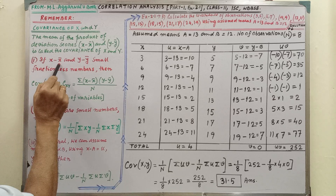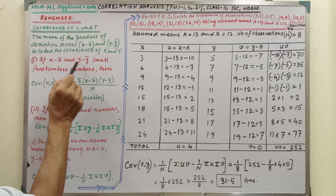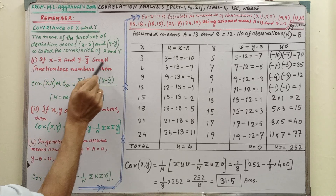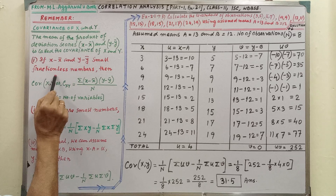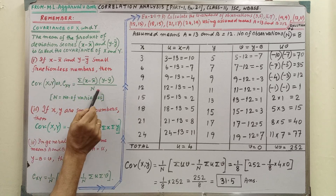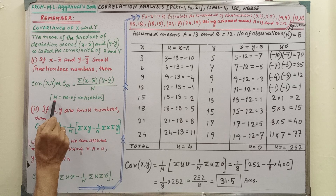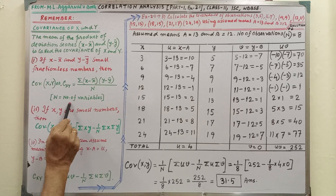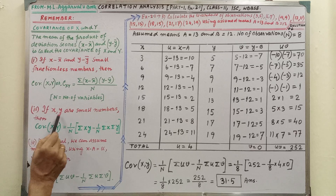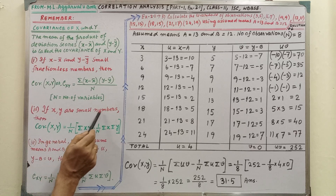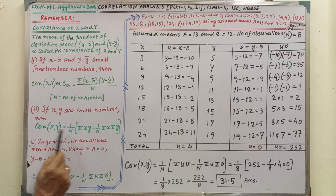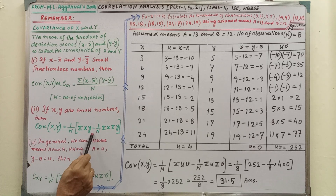Condition one: if x minus x-bar and y minus y-bar are small fractionless numbers, then we have to apply this form. Here, capital N equals the number of variables or observations. Condition two: if x and y are small numbers, then we have to apply this form.